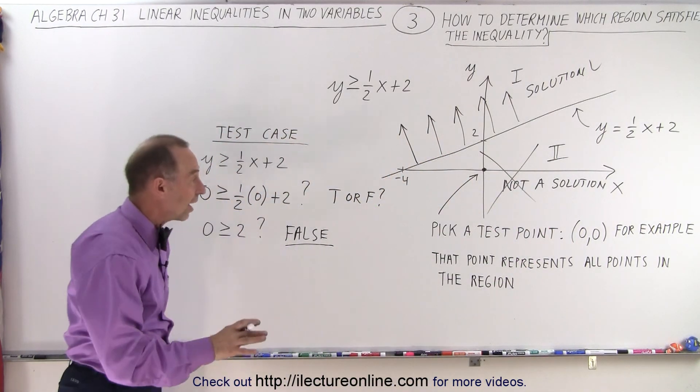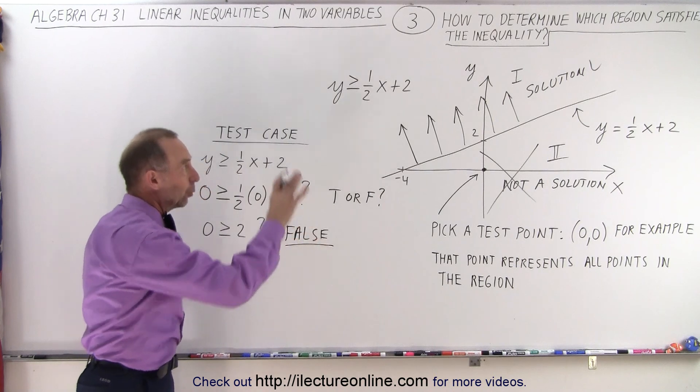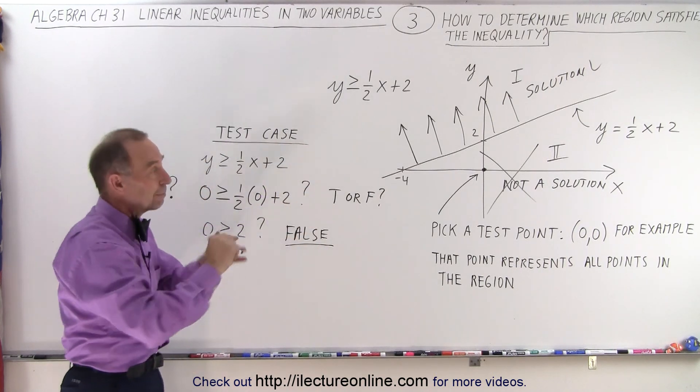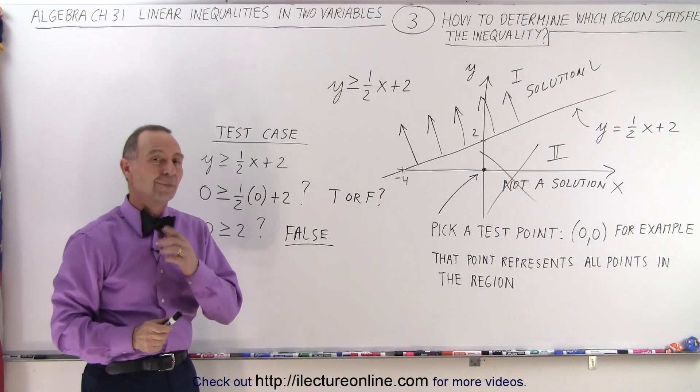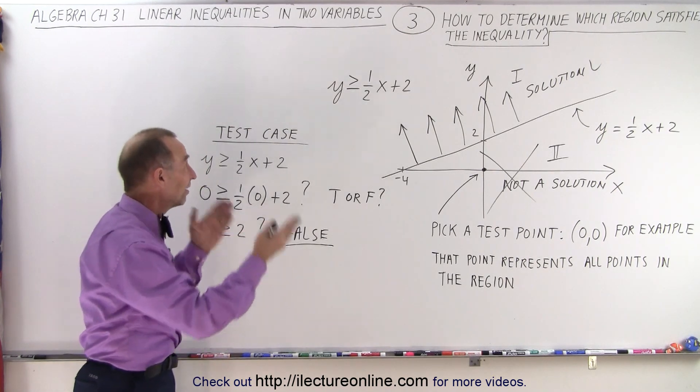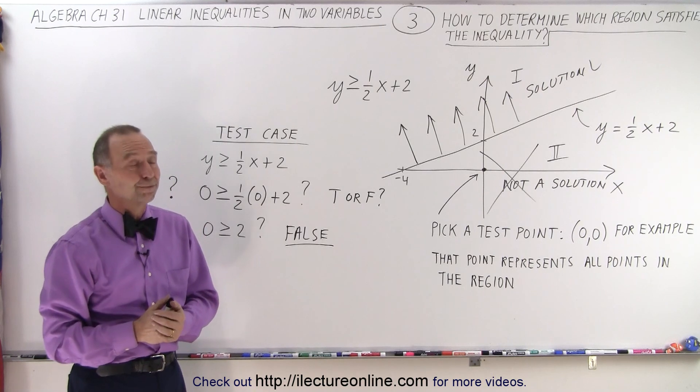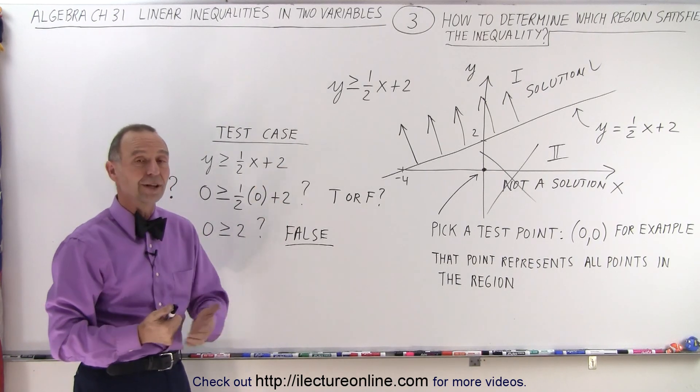That is how we decide by picking a test point in one of the two regions defined by that dividing line to see which side satisfies the inequality and which side doesn't. And that is how it's done.